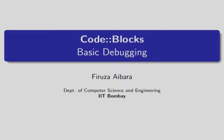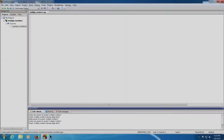Welcome to the course on computer programming and to the session on code blocks. In this session, we will see how to debug our programs using this IDE. We want to write a program that accepts a number from the user and prints its tables. To use the debugging feature, we need to create a project and not a file. Assuming that the project 'multiply numbers' is already created, we shall start writing the program.